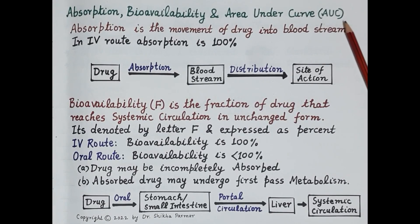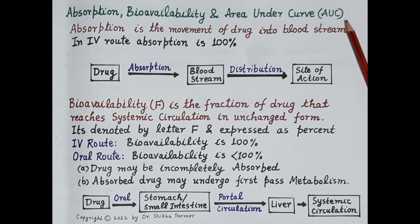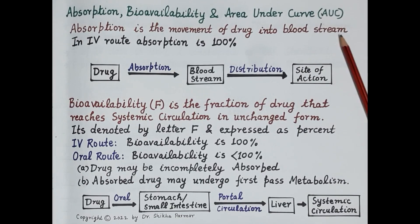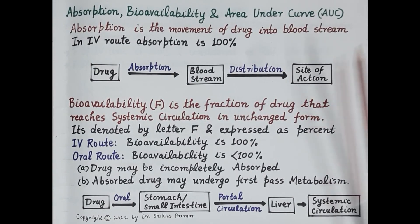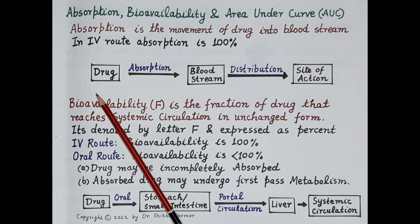Hello students. In this video we will try to understand the term absorption, concept of bioavailability, and significance of area under curve — that is, area under plasma drug concentration-time curve. This video is the third in the series of videos on pharmacokinetics. In simple terms, absorption is the movement or transport of a drug into the bloodstream after its administration.